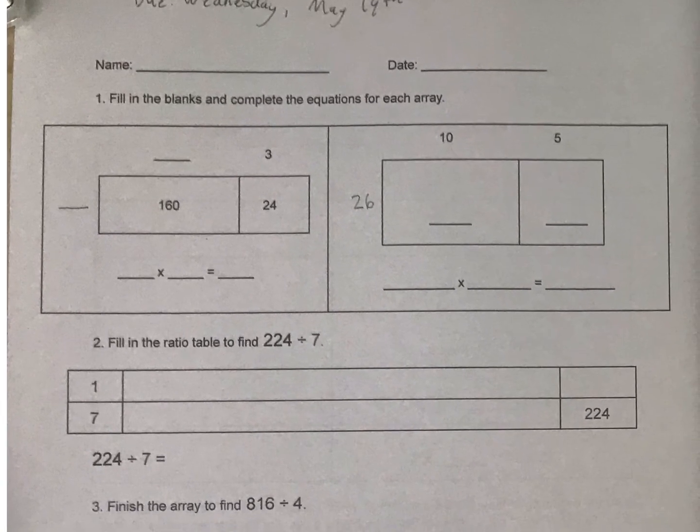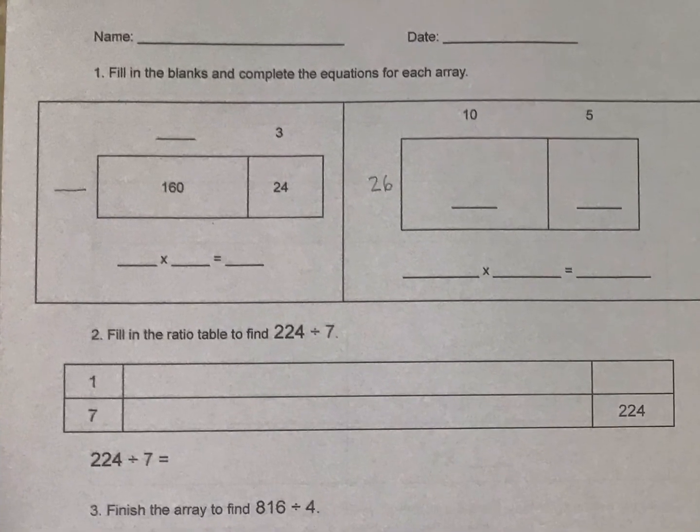So let's go to number one. We have a couple of arrays or area models for multiplication. Here I have the inside area numbers but I need to figure out the outside dimensions. So if this is 24 and this is 3, 24 divided by 3 would give me what? That is going to be 8.